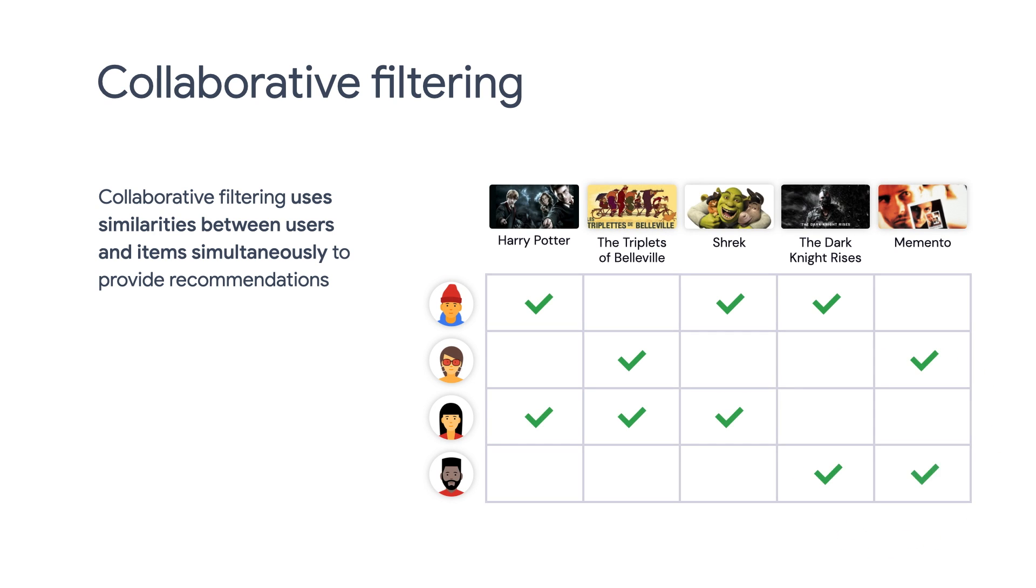Here we are illustrating a feedback matrix of four users and five movies. Each row represents a user, and each column represents a movie. The green checkmark means that a user has watched a particular movie. We consider this an implicit feedback. In contrast, if a user gives a rating on the movie, that would be an explicit feedback. So as you can see here, the user in the first row has watched three movies: Harry Potter, Shrek, and The Dark Knight Rises. Now for the user in the third row, she has also watched Harry Potter and Shrek. So it may make sense to recommend The Dark Knight Rises to her, since the first user has similar preference to her. So that's the idea of collaborative filtering.